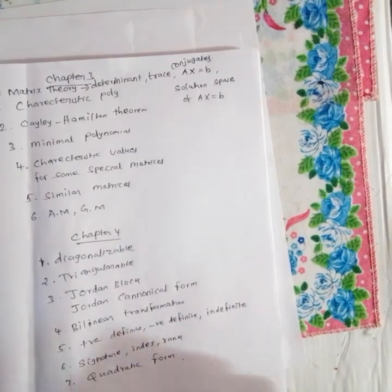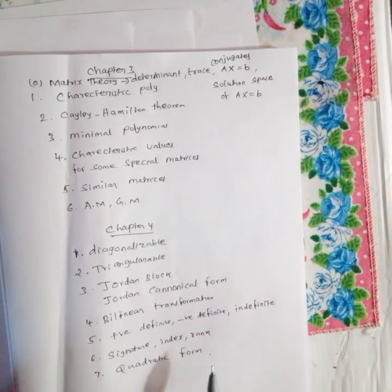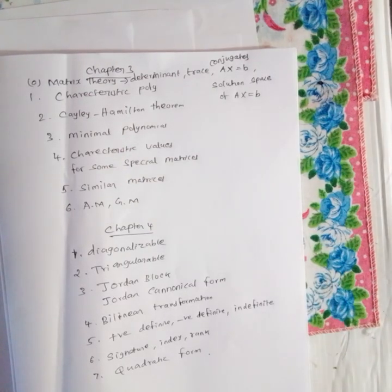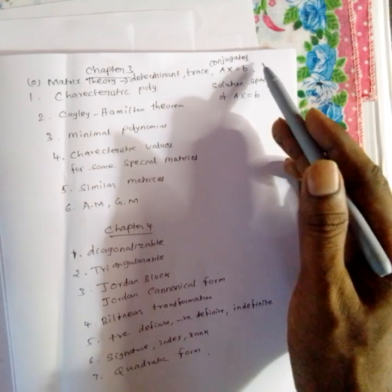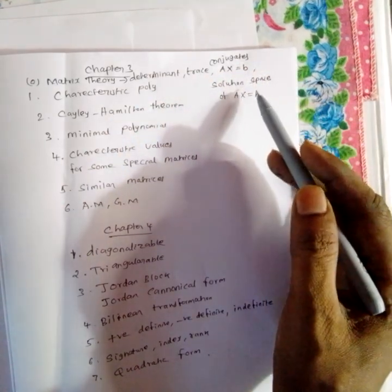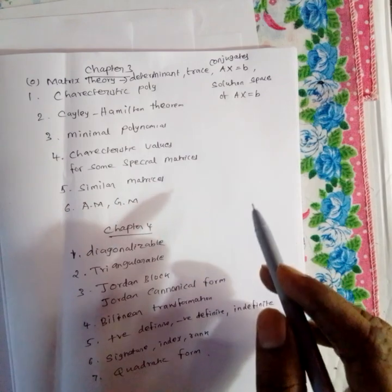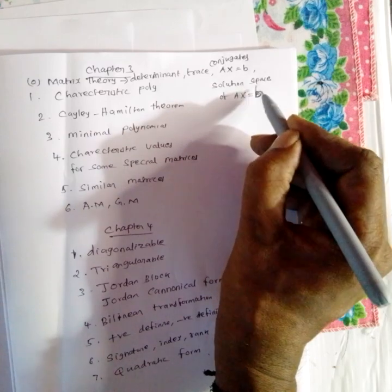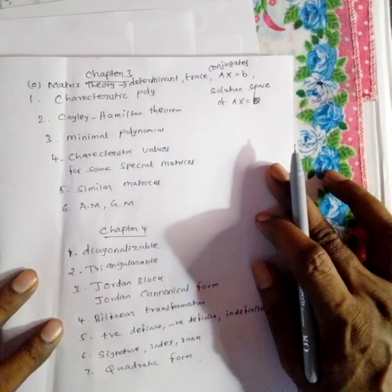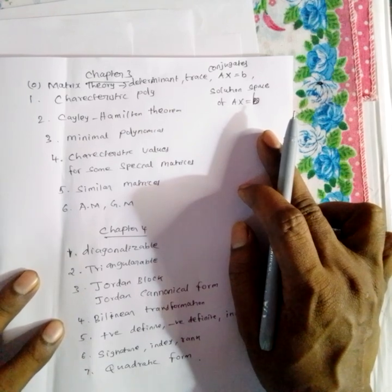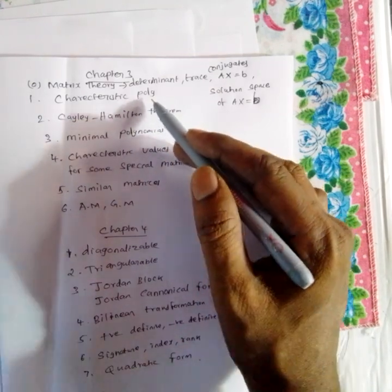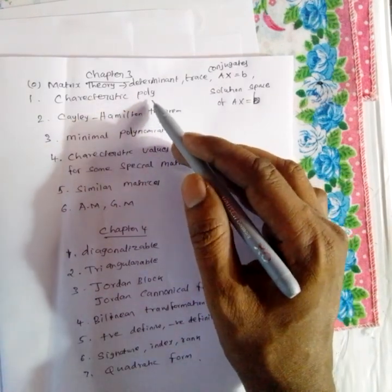Chapter 3 is the matrix series. The matrix series covers the inverse, the trace, the conjugate, the system of equations. The solution can be consistent and inconsistent. The solution space is very important. That leads to characteristic polynomials — eigenvalues. Every square matrix satisfies its own characteristic polynomial.